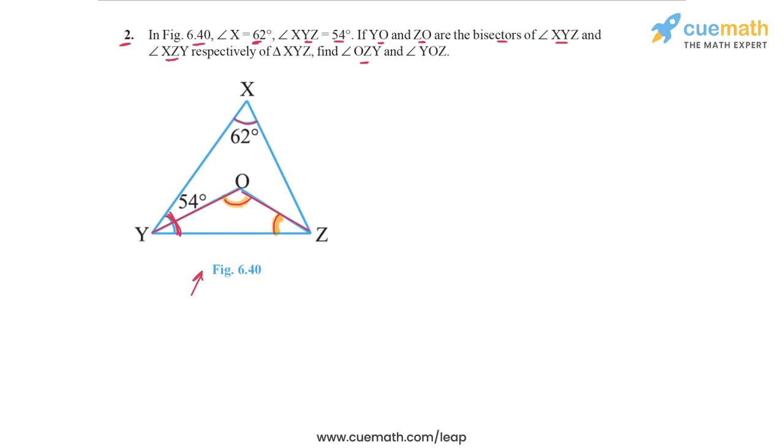So this is a fairly easy question if you use step by step reasoning. First we apply, we will apply the angle sum property in triangle XYZ. We already know two of the angles, we know this angle here 62 degrees, we know this angle 54 degrees.